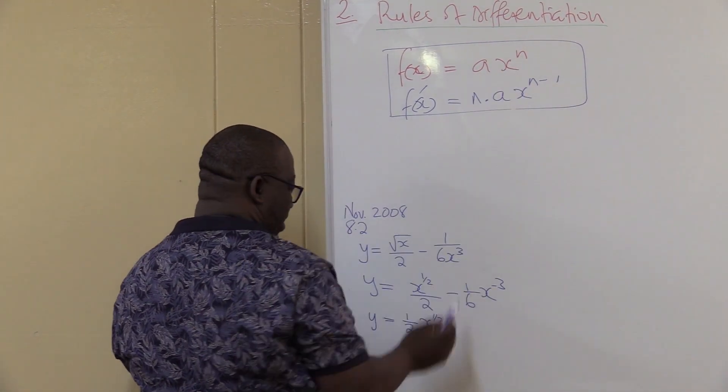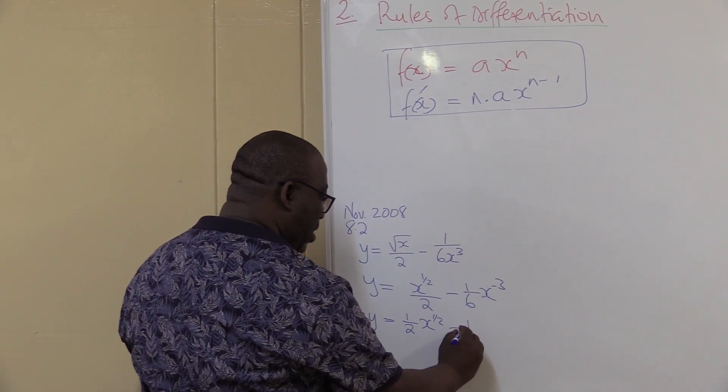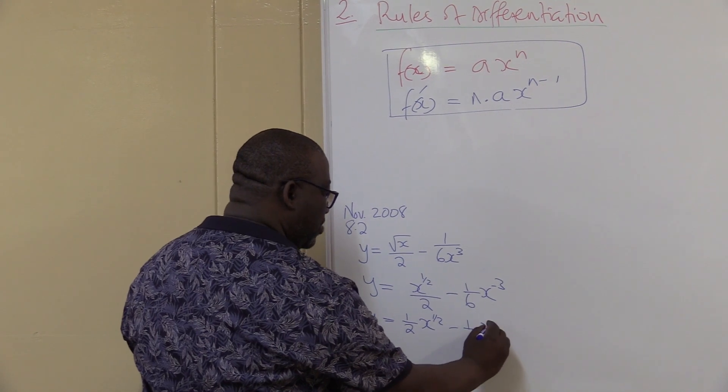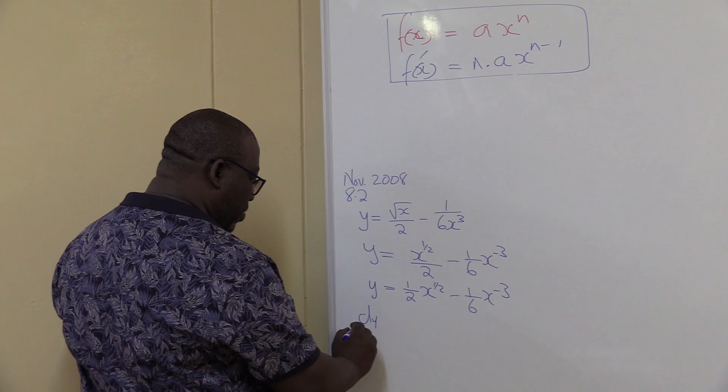This one is in that form as well, ax to the power n. So it's minus 1 over 6, x to the power minus 3. Once it is in this form, I can find my dy dx.